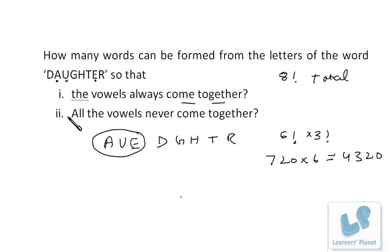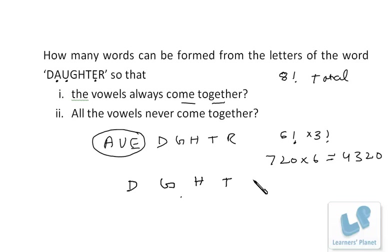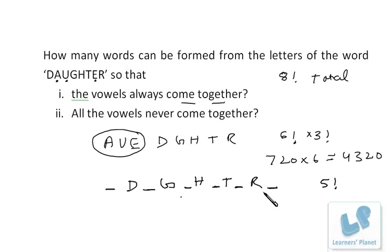For Case 3, when not even two vowels are together: we have three vowels and five consonants. First, arrange the five consonants — five places, five letters, arranged in 5 factorial ways. For example: D, G, H, T, R in one arrangement. In all there are 5 factorial arrangements. Since we want no two vowels adjacent, we fit the vowels into the gaps between consonants. The available gaps are: before the first consonant, between each pair, and after the last — giving one, two, three, four, five, six positions.